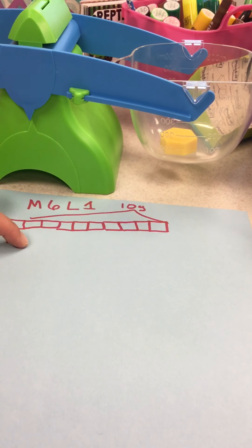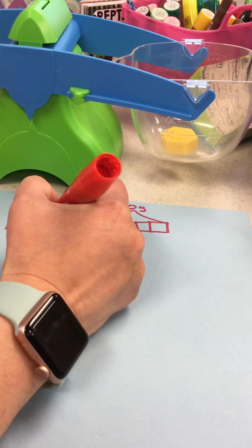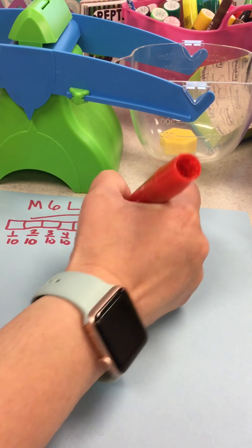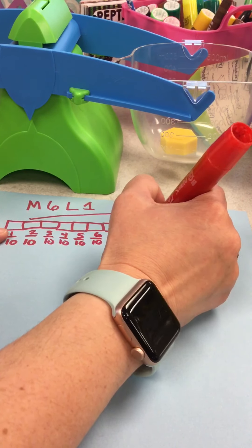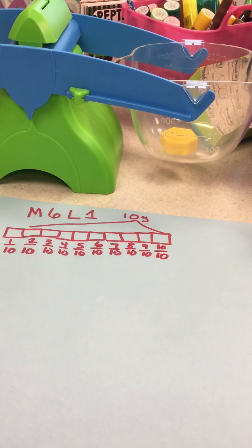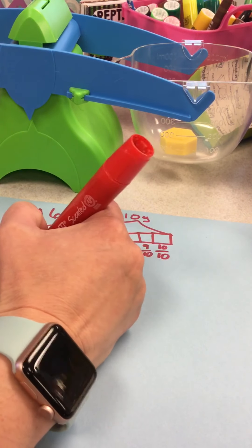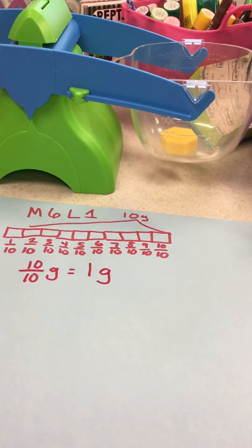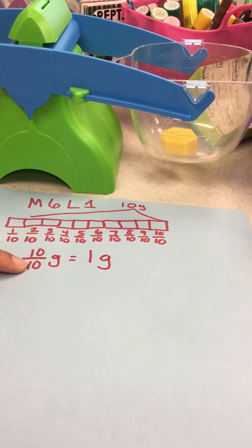So here's one tenth, one tenth, so one tenth plus one tenth. So this one would be two tenths, three tenths, four tenths, five tenths, six tenths, seven tenths, eight tenths, nine tenths, and I got ten tenths, or we could say ten grams. So I know that ten tenths grams equals one gram, because I know that ten over ten is one whole.